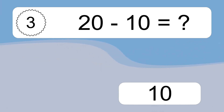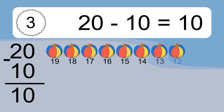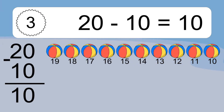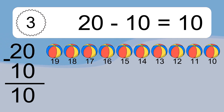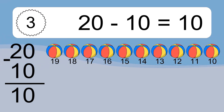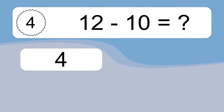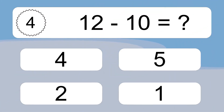20 minus 10 equals what? 20 minus 10 equals 10. Let's count it: 19, 18, 17, 16, 15, 14, 13, 12, 11, 10.